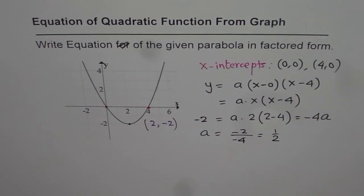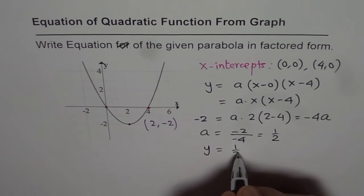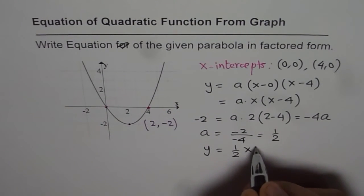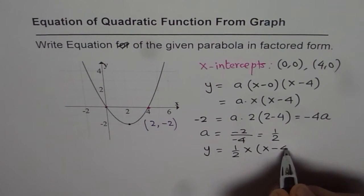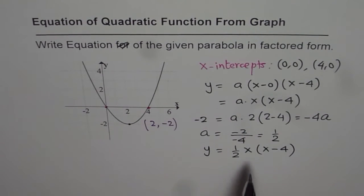So a is half. Since a is half we can write down the equation as y equals to half of x times (x minus 4). So that becomes the equation in factored form for the given parabola.